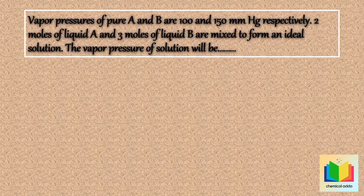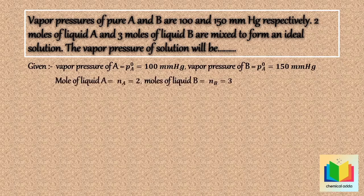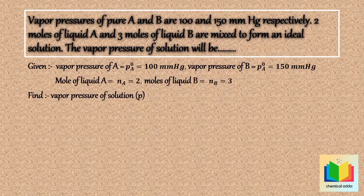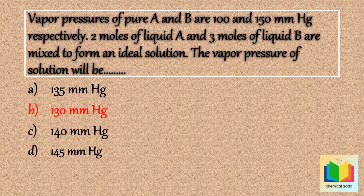Let's see how. Given: vapor pressure of A (pA⁰) = 100 mmHg, vapor pressure of B (pB⁰) = 150 mmHg, moles of liquid A (nA) = 2, moles of liquid B (nB) = 3. We need to find the vapor pressure of the solution. Using the formula for vapor pressure of an ideal solution expressed in terms of moles, after solving we get P = 130 mmHg. Hence the answer is option B: 130 mmHg.